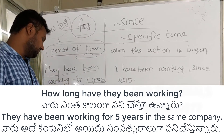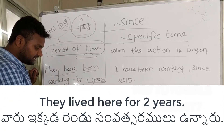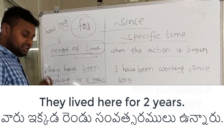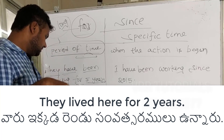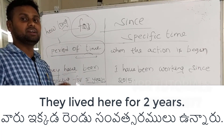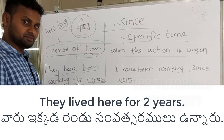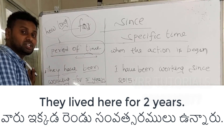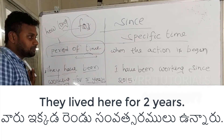Let's go to the next example. They lived here for two years. They lived here for two years — again, 'for' is used with a period of time like 'two years'.